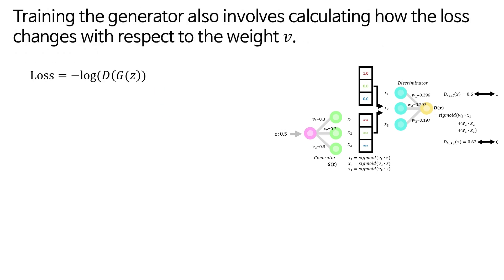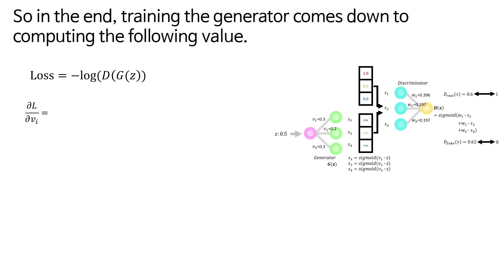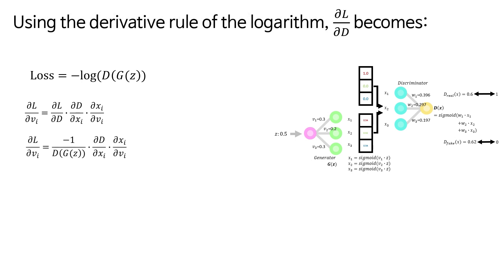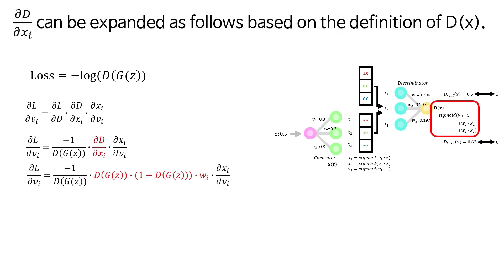Training the generator also involves calculating how the loss changes with respect to the weight v. So in the end, training the generator comes down to computing the following value. Using the chain rule, it expands as follows. Using the derivative rule of the logarithm, ∂L/∂D becomes ∂D/∂x_i.